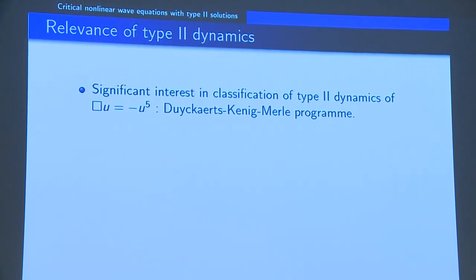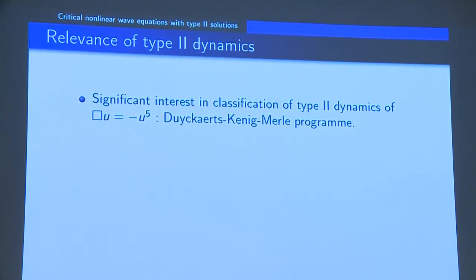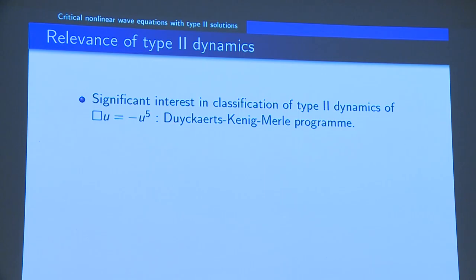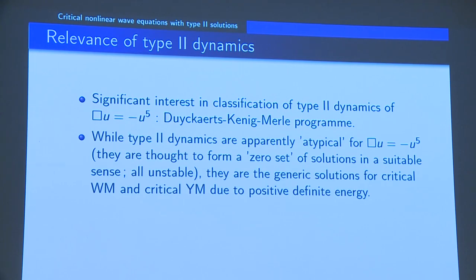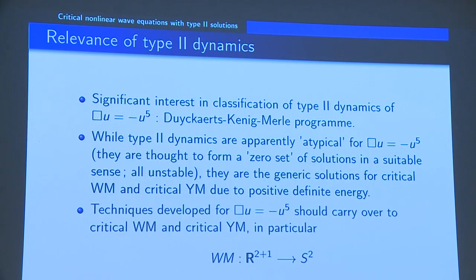There has been a lot of interest in this model in part because of the Duyckaerts-Kenig-Merle program, which enables a complete abstract understanding of all type 2 dynamics. Understanding type 2 dynamics here most likely will help us understand them for critical wave maps and Yang-Mills, which are more physical models. In particular, for wave maps from R^{2+1} into S^2, there is a very neat soliton resolution picture waiting to be uncovered.